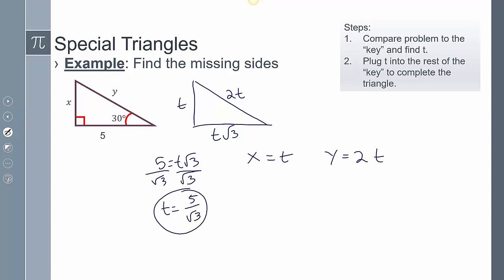Now I can take this and plug it back in to both of these. I'm going to get x equals 5 over root 3, which if I wanted to rationalize it, that's 5 root 3 over 3. And then here I can say y equals 10 root 3, 10 over root 3, which is going to be the same as 10 root 3 over 3.